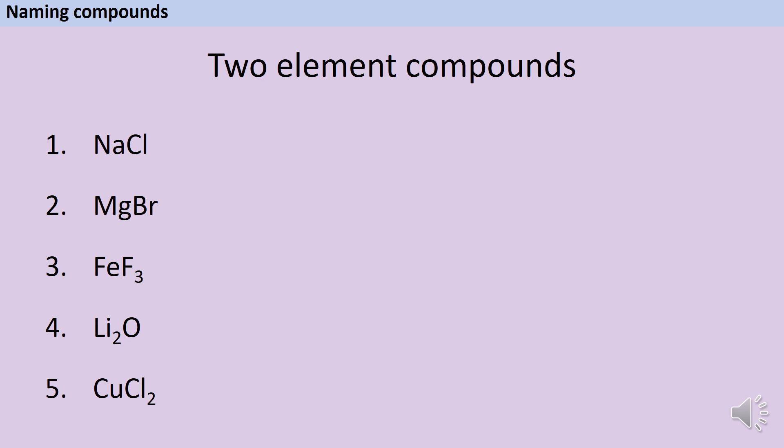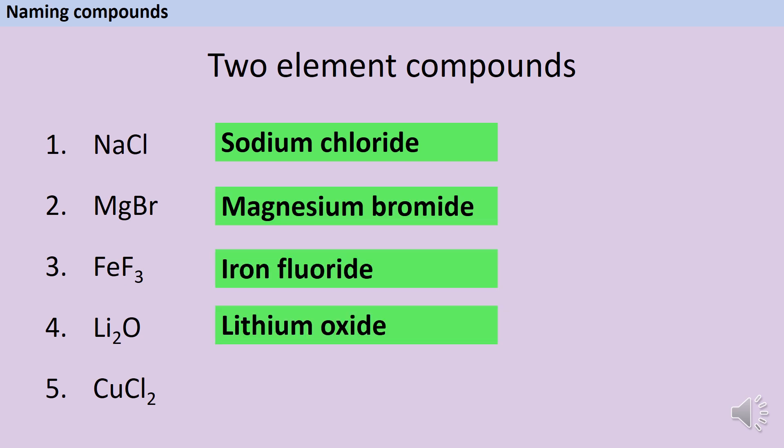Hopefully that wasn't too tricky for you. In the first element, we have sodium reacting with chlorine. Sodium is the metal, and chlorine is the non-metal. So the compound is called sodium chloride. Then we have magnesium bromide, iron fluoride, lithium oxide, and copper chloride.